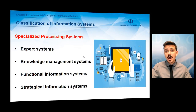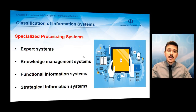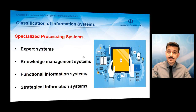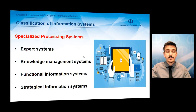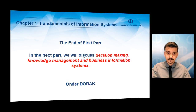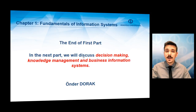Special processing systems are classified under both operation support systems and management support systems. There are four types: expert systems, knowledge management systems, functional information systems, and strategic information systems. These information systems are designed and developed for special purposes for business operations. And with this, we come to the end of the first part of the first chapter. In the next part, we will discuss decision making, knowledge management, and business information systems.